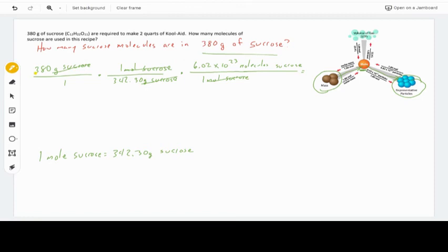I'm done. So remember, multiplication sign before a top number, division sign before a bottom number. So when I plug this into my calculator, I'm going to put 380 times 6.02 times 10 to the 23rd and divided by 342.30, and that ends up giving me a number of 6.68 times 10 to the 23rd molecules of sucrose.